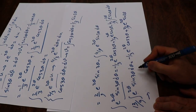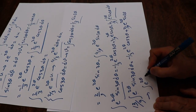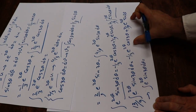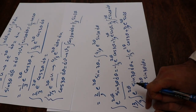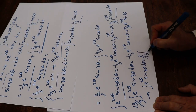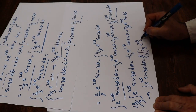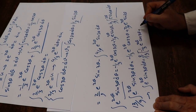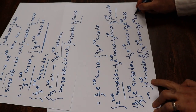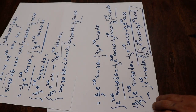Therefore, the integral of e^(2θ) times sine 3θ dθ equals 9/13 times that right-hand side: 9/13 times minus 1/3 · e^(2θ) cosine 3θ plus 2/9 · e^(2θ) sine 3θ. And this is the solution to our integral.